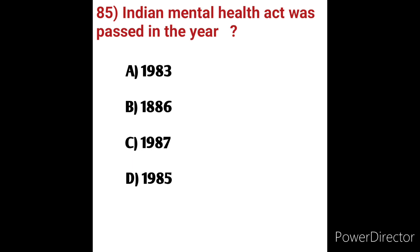Question 85: The Indian Mental Health Act was passed in which year? Options: A) 1983, B) 1886, C) 1987, D) 1985. The objectives of the Indian Mental Health Act of 1987 were to regulate government powers for establishing, licensing, and controlling psychiatric hospitals and nursing homes. The first mental health hospital in India was in Bombay/Mumbai in 1745. Option C, 1987, is the correct answer.